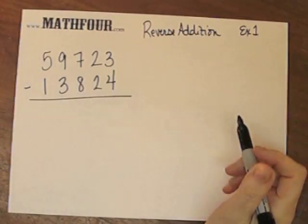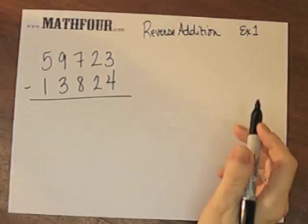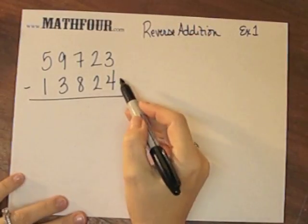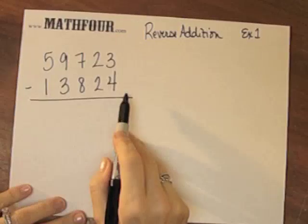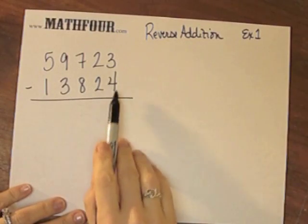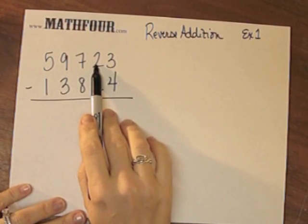Here's another example of what I'm calling reverse addition. I have a subtraction problem, and here you can immediately see 3 minus 4, can't do, so you'd have to borrow.